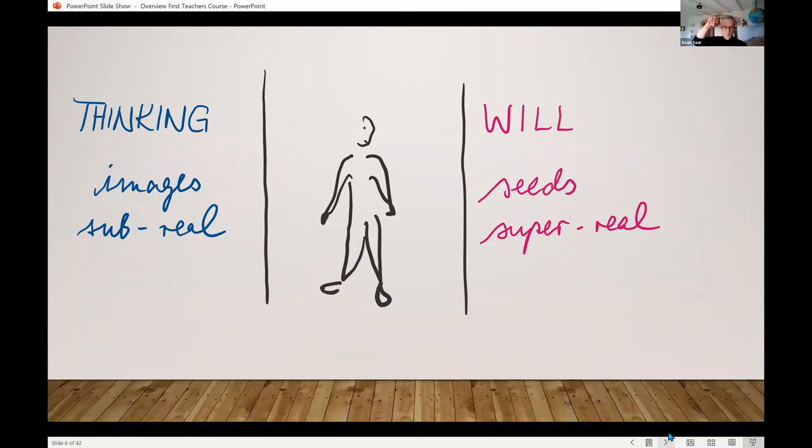The picture of the oak tree is less than real. The acorn, the seed for the future, is super real. One is connected to the past, the other to the future. Thinking to the past, the will, the action to the future.